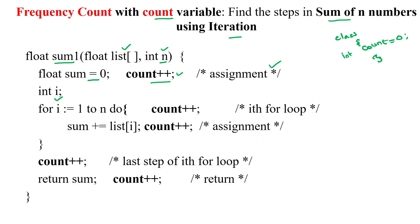Then we are declaring the variable. For declaration, we will not increment the count variable, so it will take only 0 time complexity for the declaration. Then the next one is the for loop, which is the control part. As per the procedure, the control part will be assigned a single operation, so this is incremented by 1.